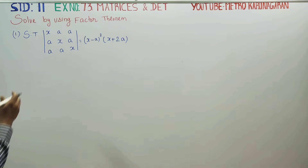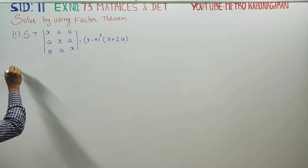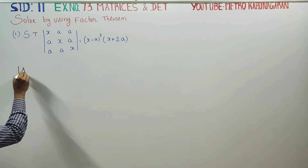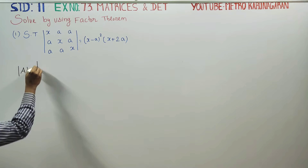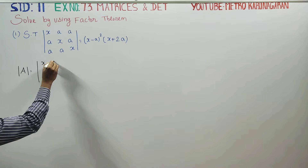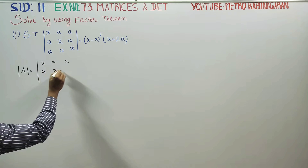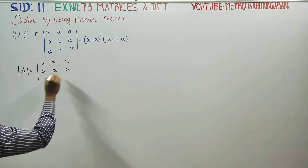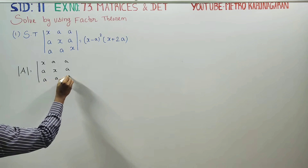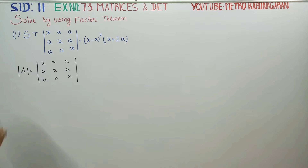First of all, the determinant Delta is defined as: the 3×3 matrix with x, a, a in the first row; a, x, a in the second row; and a, a, x in the third row. That is the determinant.